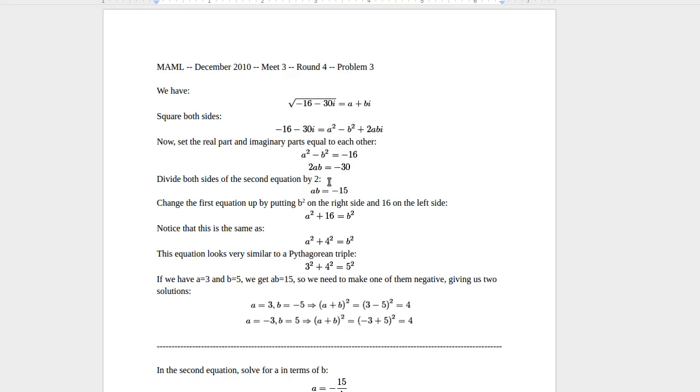So you have to set the different parts equal to each other to get two equations. And then you divide both sides of the second equation, and that gives you ab equals negative 15. I just did that to simplify things. And then on this side, you have a squared minus b squared equals negative 16, and then I manipulated it a little so it's a squared plus 16 equals b squared.